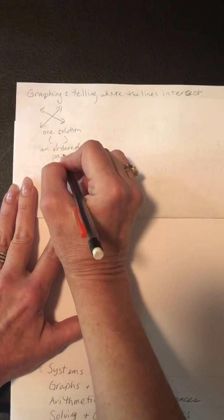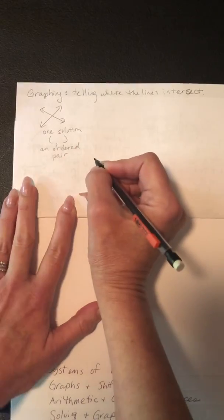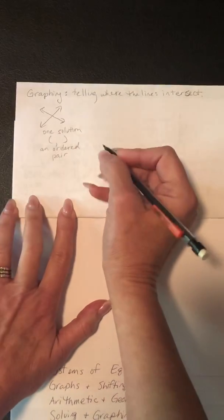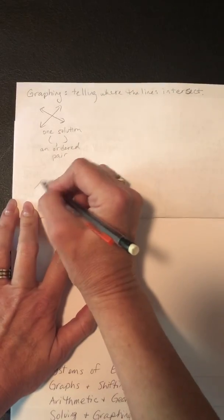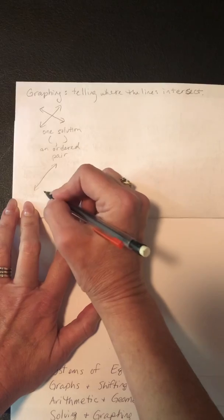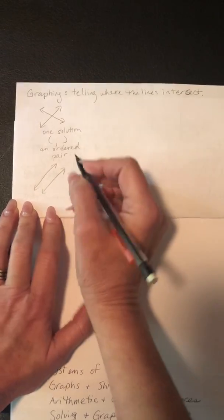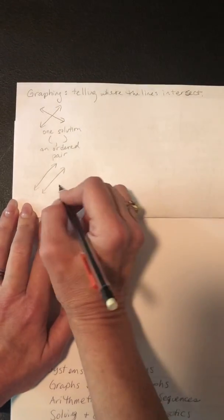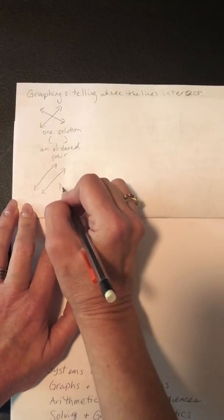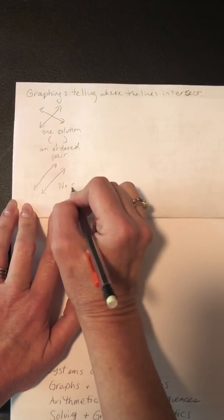The second thing that can happen is the lines could be parallel to each other, and in that case they don't intersect, so there's no solution.